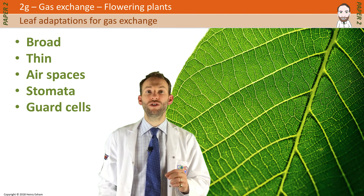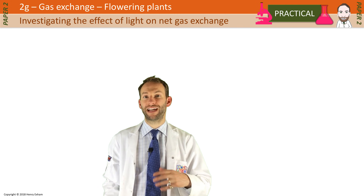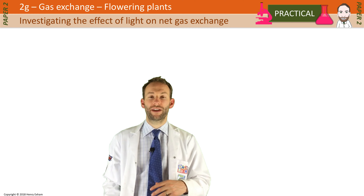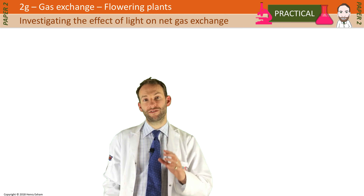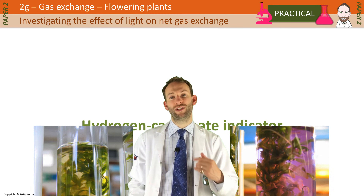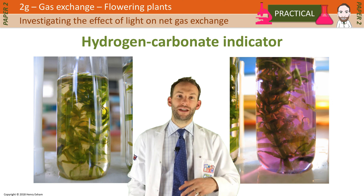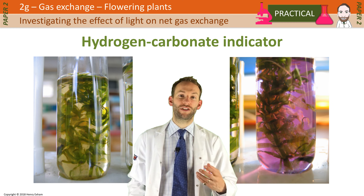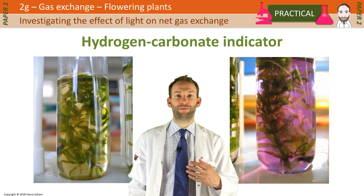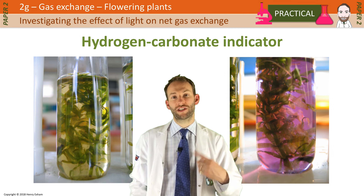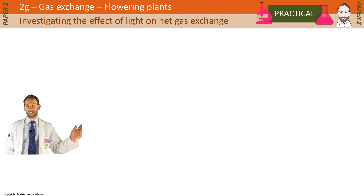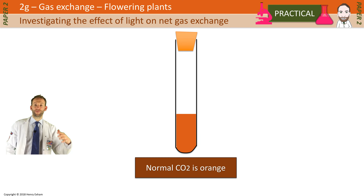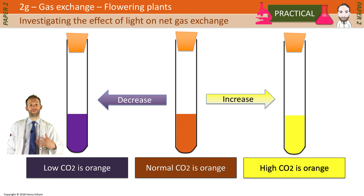You need to know a practical related to this topic: investigating the effect of light on the net gas exchange in a plant. There's a very important indicator called hydrogen carbonate indicator, which you can use to measure CO2 levels. You can put aquatic plants directly into it. Hydrogen carbonate indicator that has had lots of CO2 bubbled through it should be really yellow, and then as the plant uses up more CO2, it should go from yellow to orange to purple, depending on how much CO2 is present.